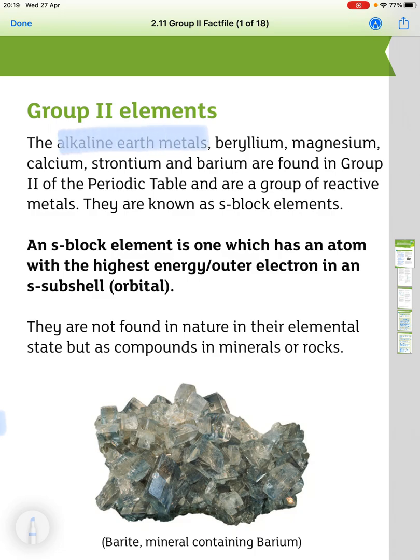So the Group 2 elements are the alkaline earth metals, and that's beryllium, magnesium, calcium, strontium, and barium. They're found in Group 2 of the periodic table and they're a group of reactive metals.